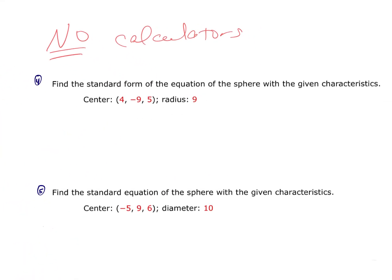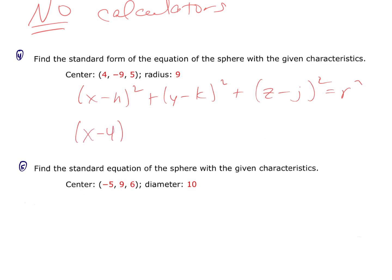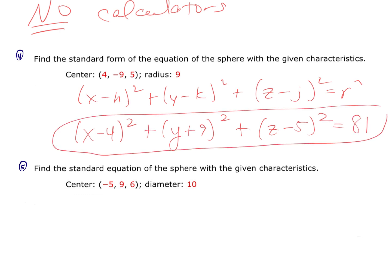Standard form of the equation of a sphere: you need the center and the radius. The equation looks like (x − h)² + (y − k)² + (z − l)² = r². Since we already have the center, plug it in: (x − 4)² + (y + 9)² + (z − 5)² = 81.